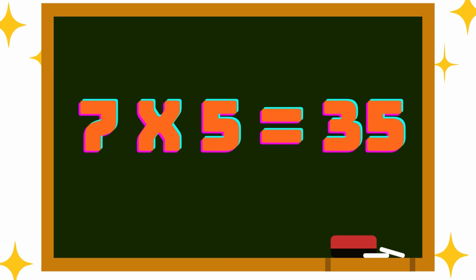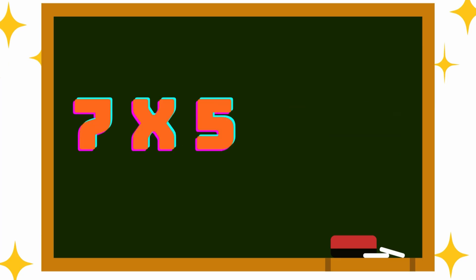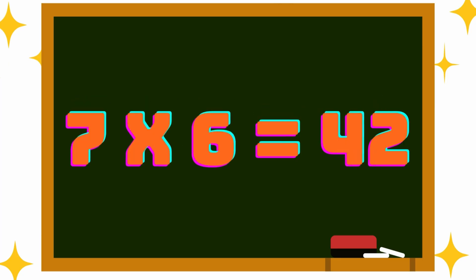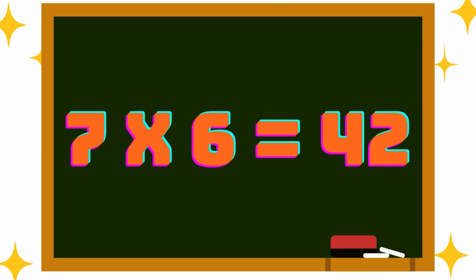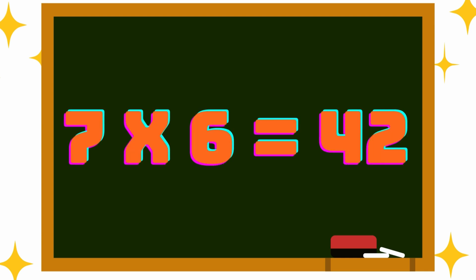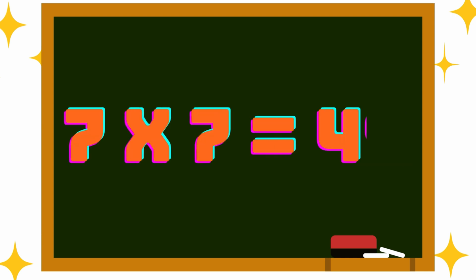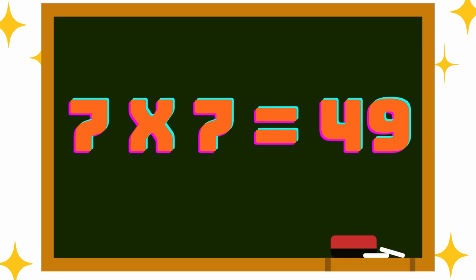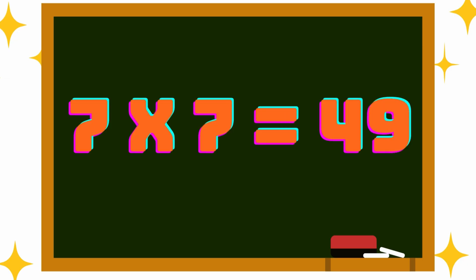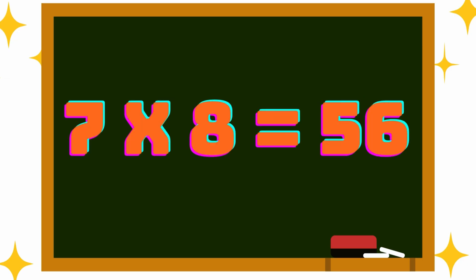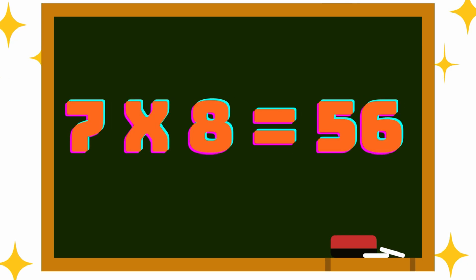7 fives are 35. 7 sixes are 42. 7 sevens are 49. 7 eights are 56.